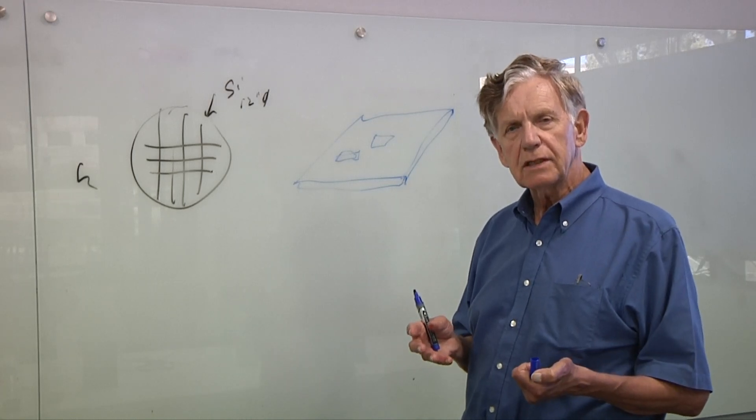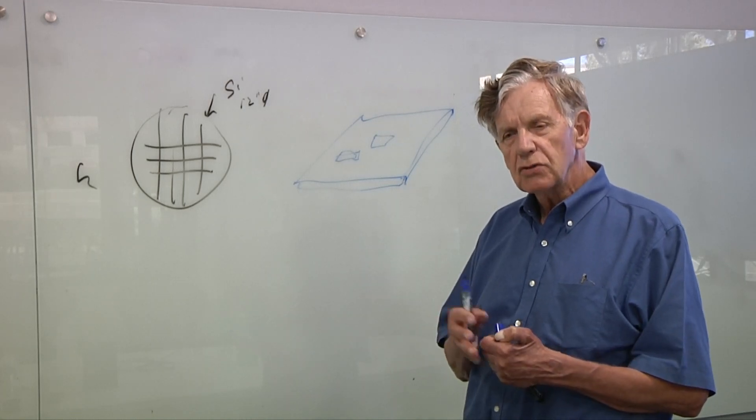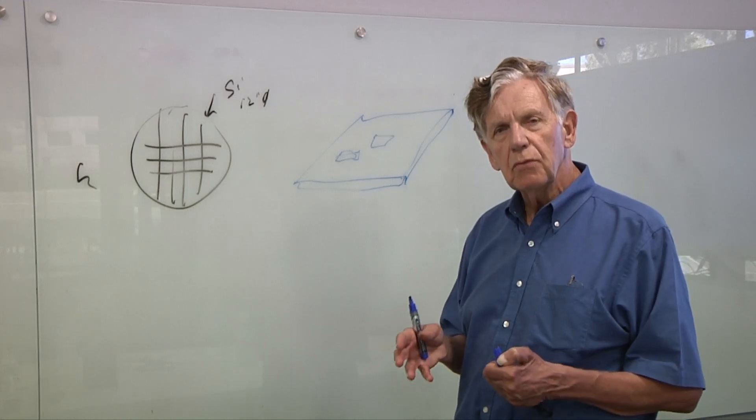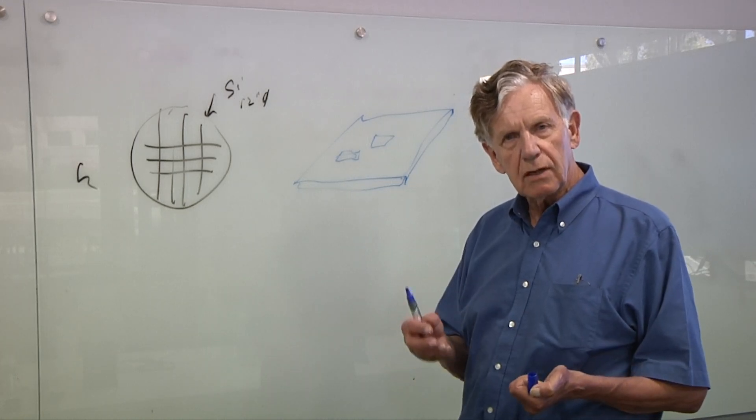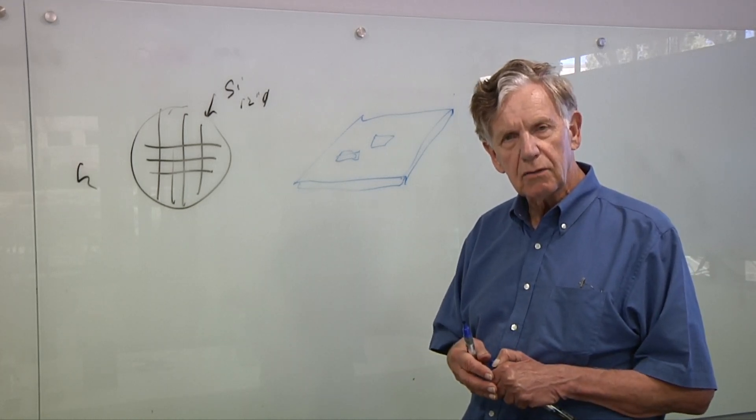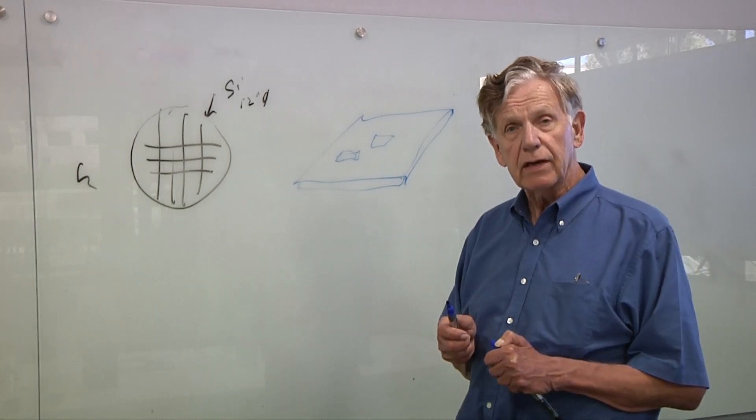You need a photo detector to detect light, a motion detector to get movement. You can have chemistries on it to detect particular kinds of molecules. And then you want to get information off of the device.